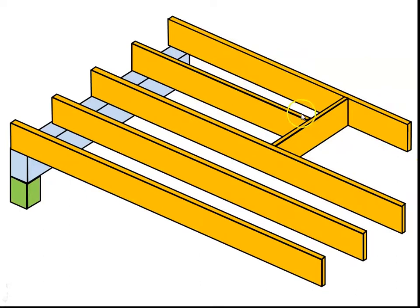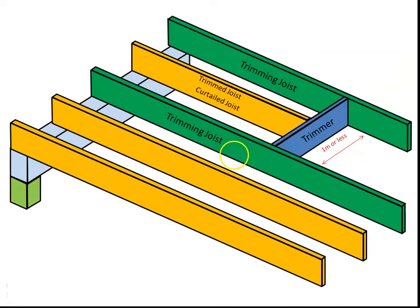You can see we've got a joist cut off with a trimmer across there to hold the load. This could be an opening in a stairwell or any other reason you might need a void in a floor. So let's start with a bit of terminology. We have the trimming joists that come down either side of the opening, and those two take the load of the trimmer which goes across to create the opening. And then of course the trimmed joist that comes in behind it there, the ones that are cut off.